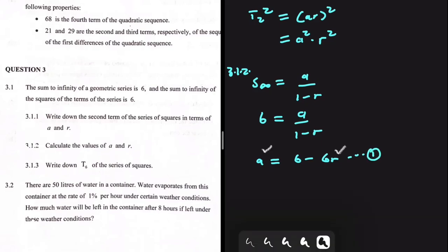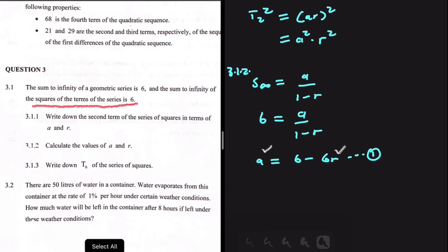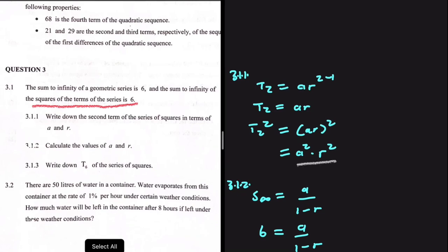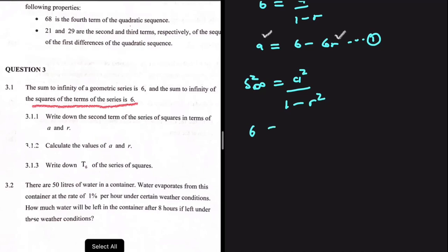The other information we have is that the sum to infinity of the squares of the terms of the series is also 6. When squaring all the terms, the first term becomes A squared and the common ratio becomes R squared, so the sum to infinity of the squares is A squared divided by 1 minus R squared. Part 3.1.1 was setting us up to make this realization.